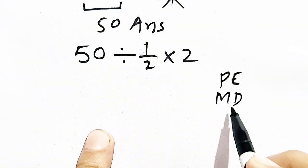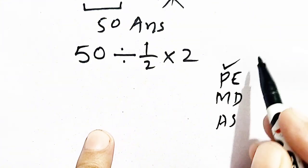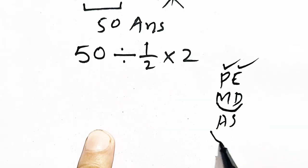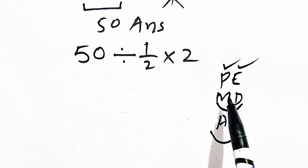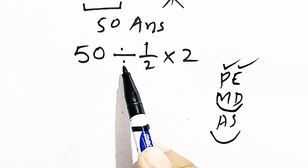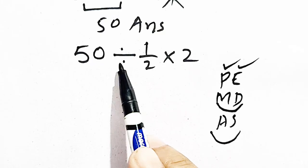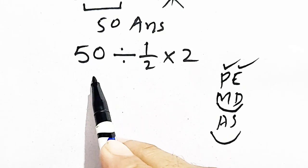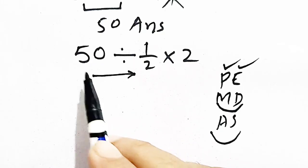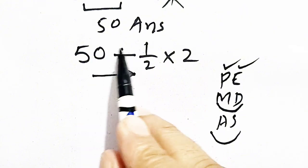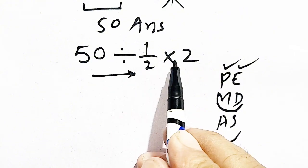What is PEMDAS? It is parenthesis, exponent, multiplication and division, addition and subtraction. So when we have division and multiplication in the same question, we have to handle the operation which is at left, meaning we have to move from left to right. So division is at left. We have to handle this division first and multiplication will be solved after.